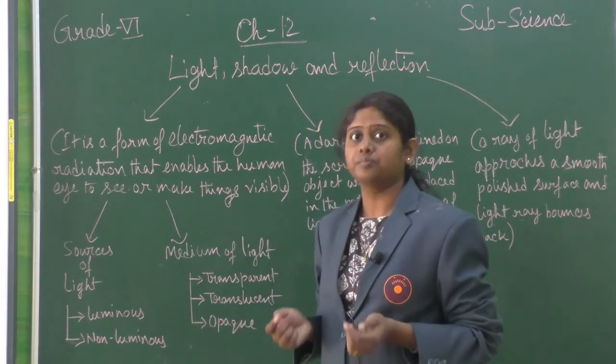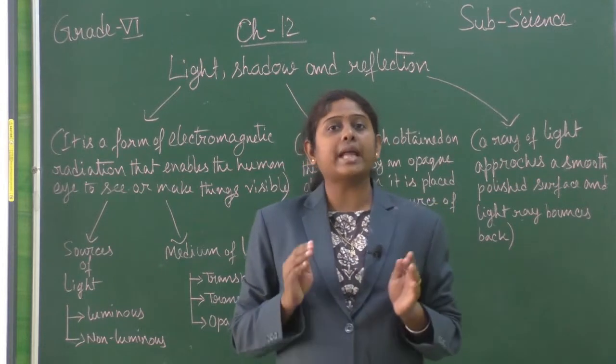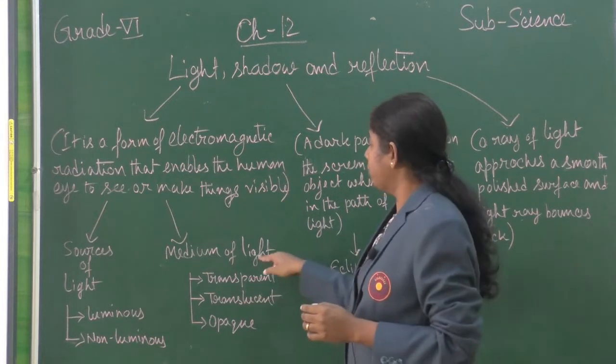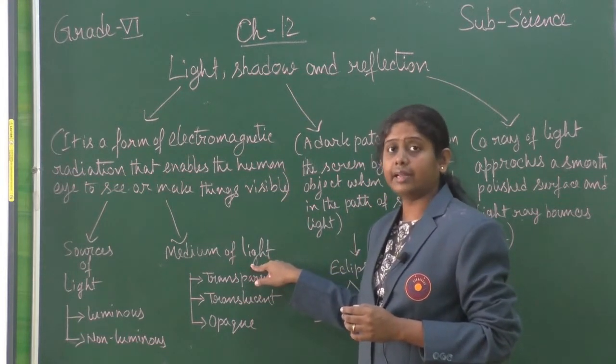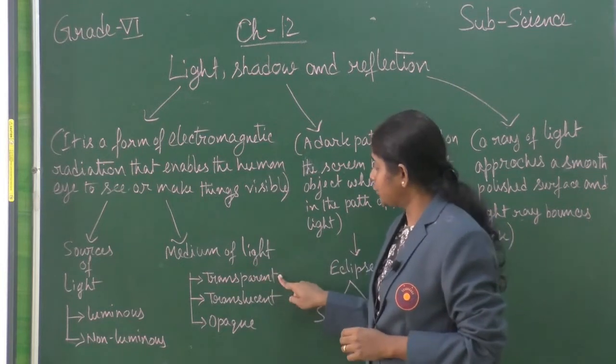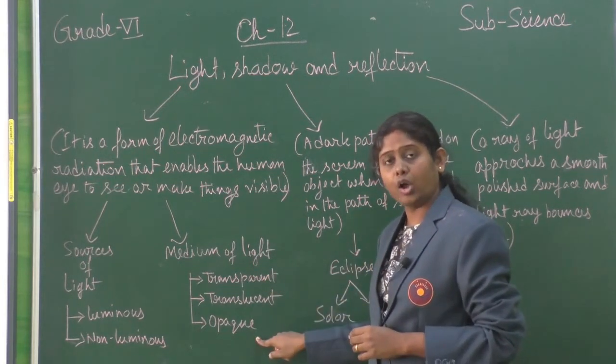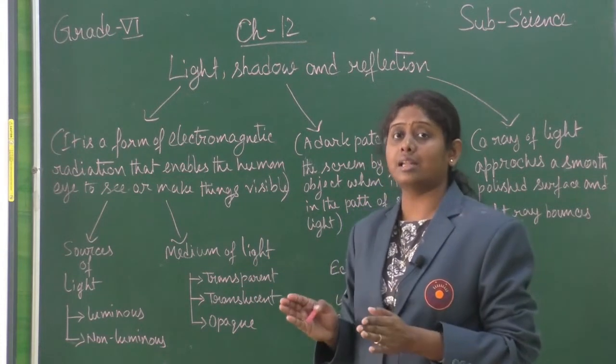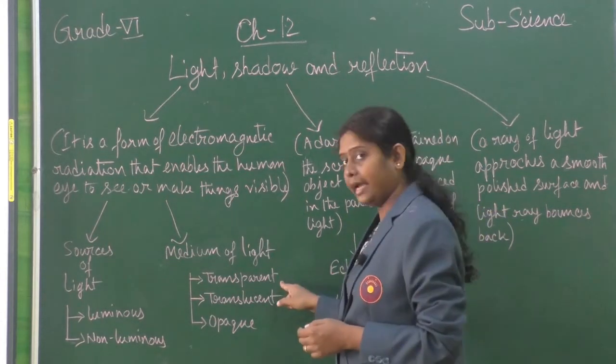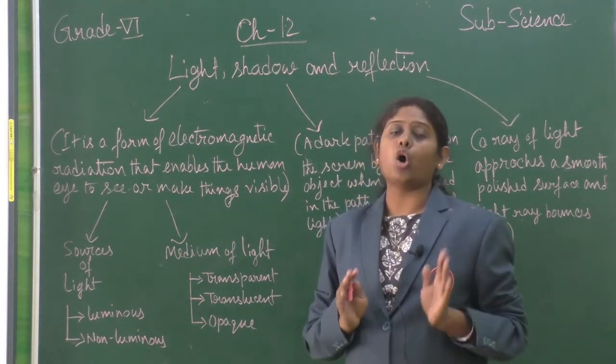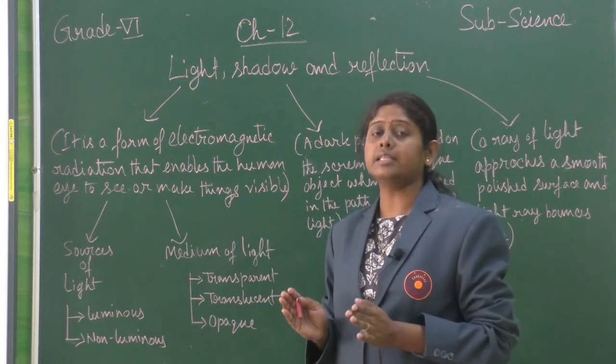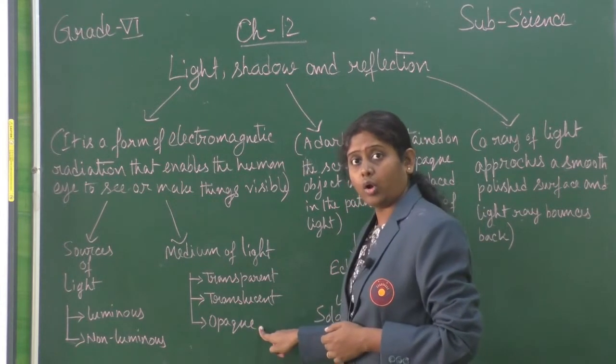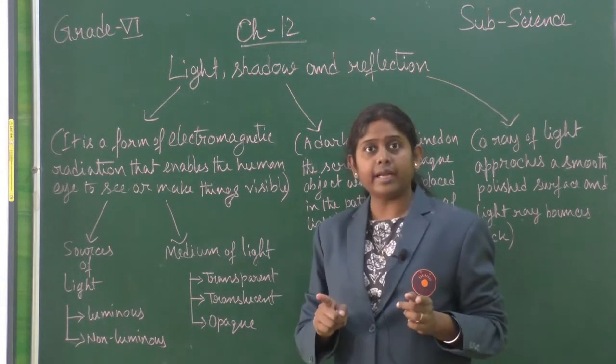Now, the substances through which light can pass, we call them medium of light. There are three types of medium: transparent, translucent, and opaque. Transparent means the object can pass light properly, example: air. Translucent means the object can pass light partially, example: butter paper. Opaque materials are objects which cannot pass light, example: wood.